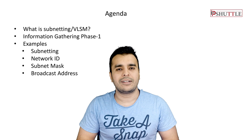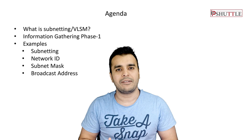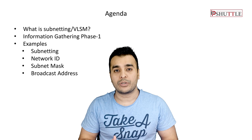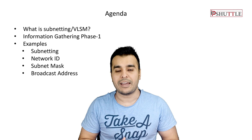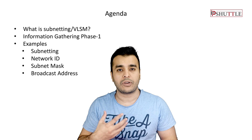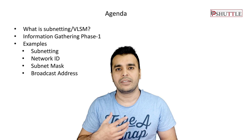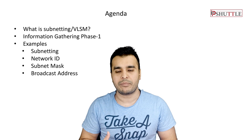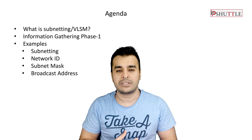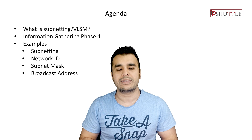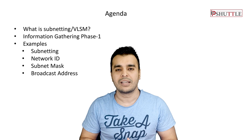Today we are going to cover what is subnetting or VLSM — variable length subnet masking — how to do that and why you need it with examples. We will be calculating different subnet IDs, their network mask, their broadcast IDs, and what will be the first and last usable IP address.